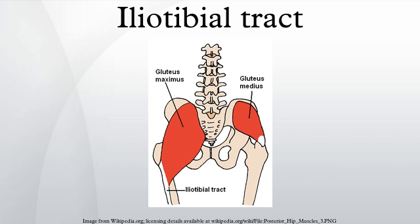Regarding postural function, the IT band is of critical importance to asymmetrical standing. The upward pull on the lower attachment of the IT band thrusts the knee back into hyperextension, thereby locking the knee and converting the limb into a rigid supportive pillar.